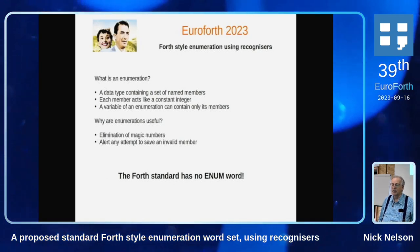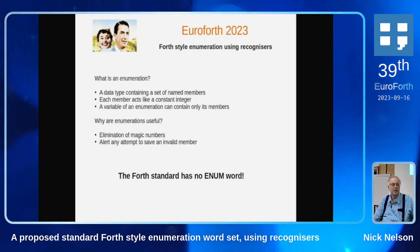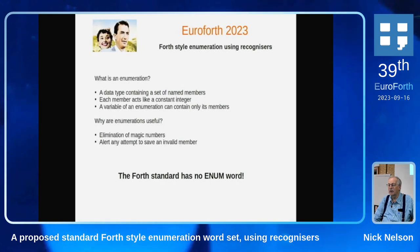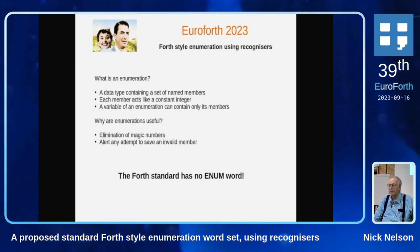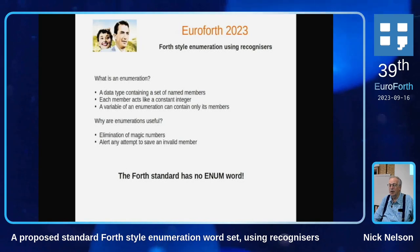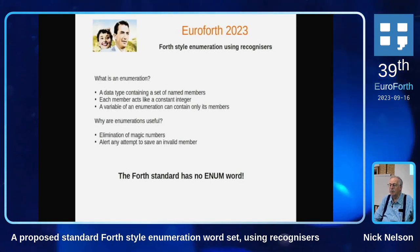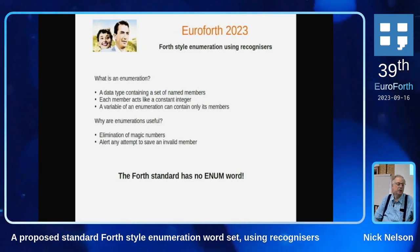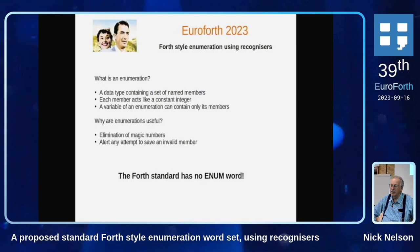So, why do we use enumerations? In our main application, something like 60 of them — they're very, very useful. Number one is for the elimination of magic numbers, and number two is to basically alert you if you try to save a number which is not a member into a variable or value which is supposedly of the data type of an enumeration.